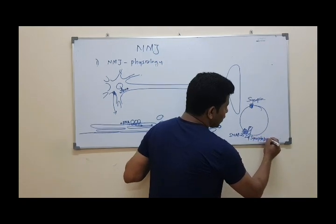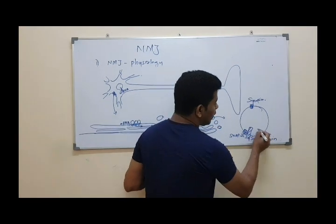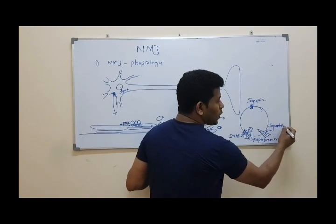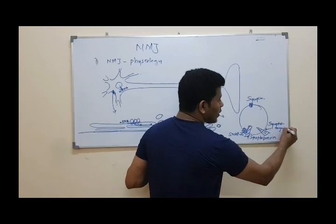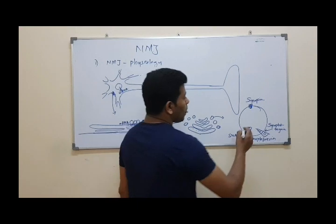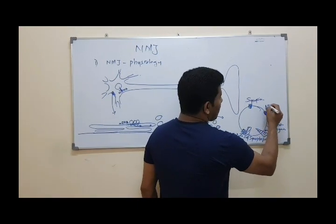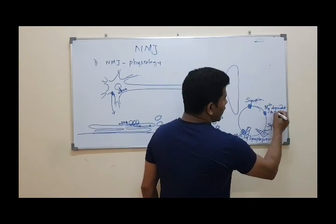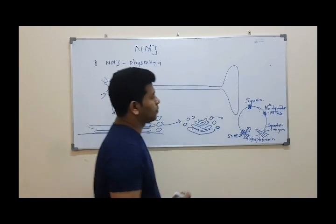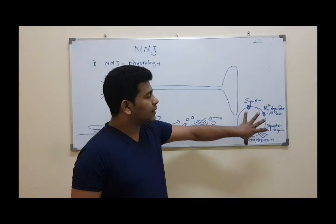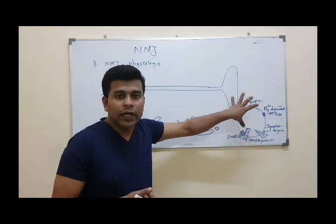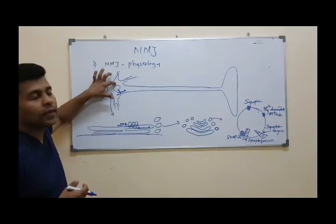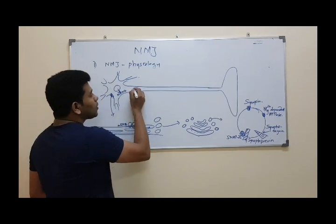Synaptobrevin. The protein is SNAP25. Synaptotagmin. The protein is magnesium-dependent ATPase. Acetylcholine-containing empty vesicles. These vesicles are formed in the cell body. The cell body manufactures them via axoplasmic flow.